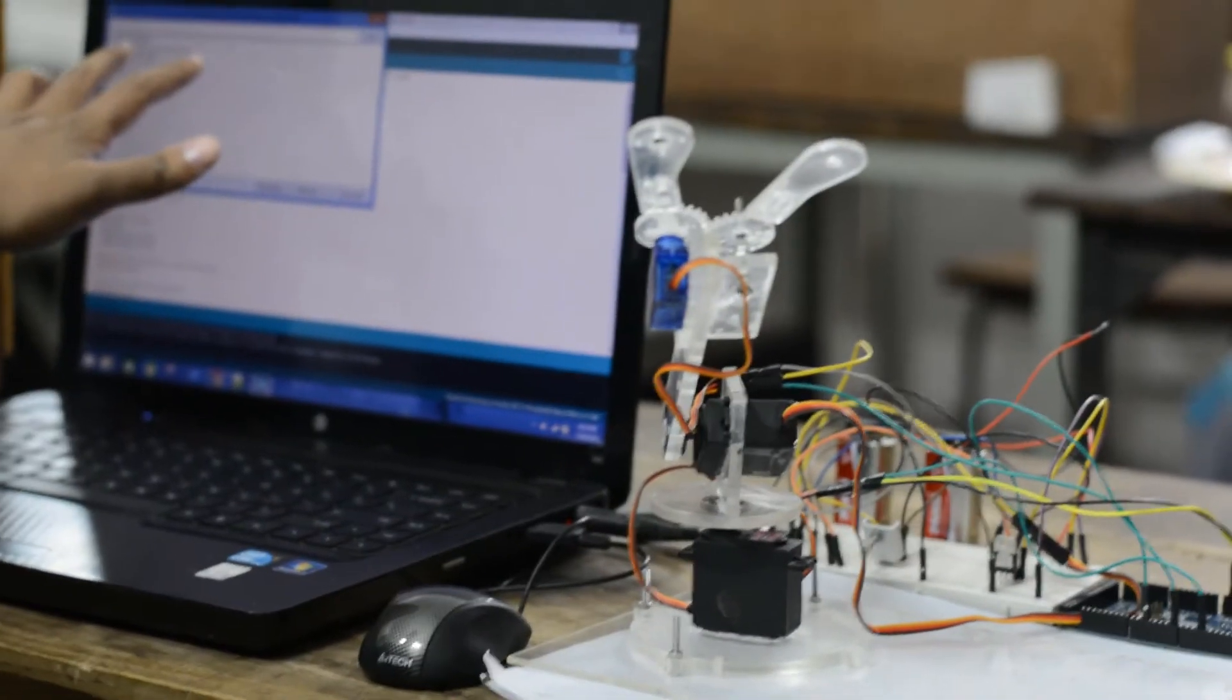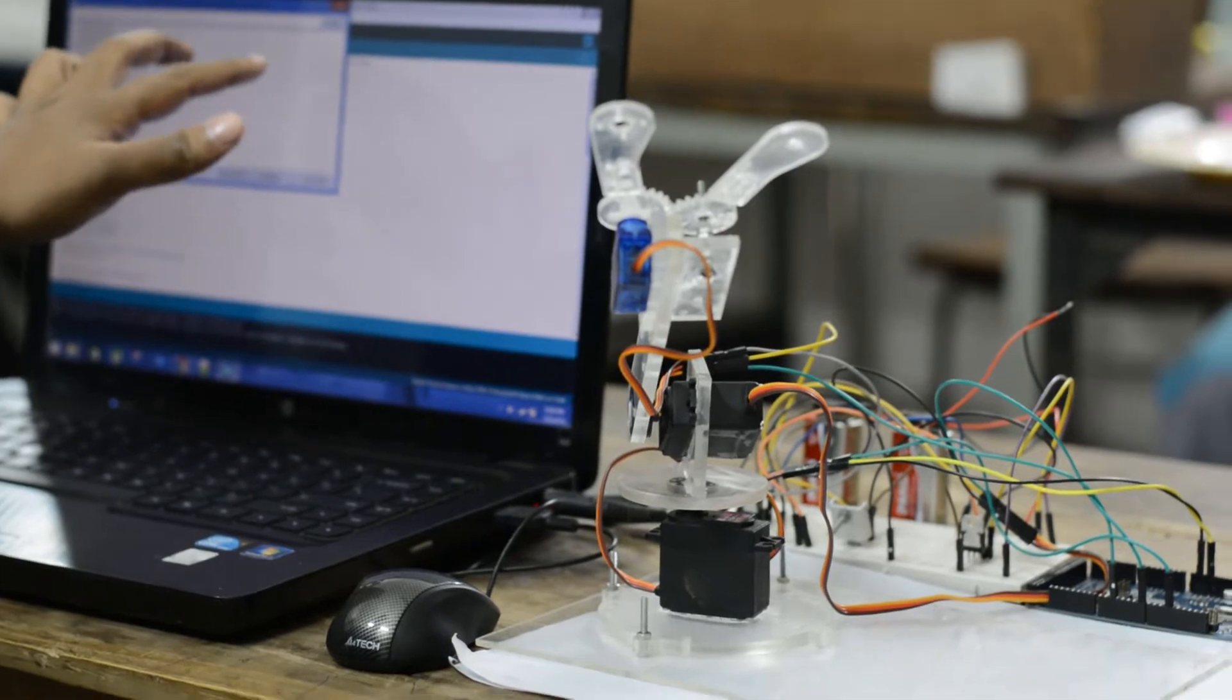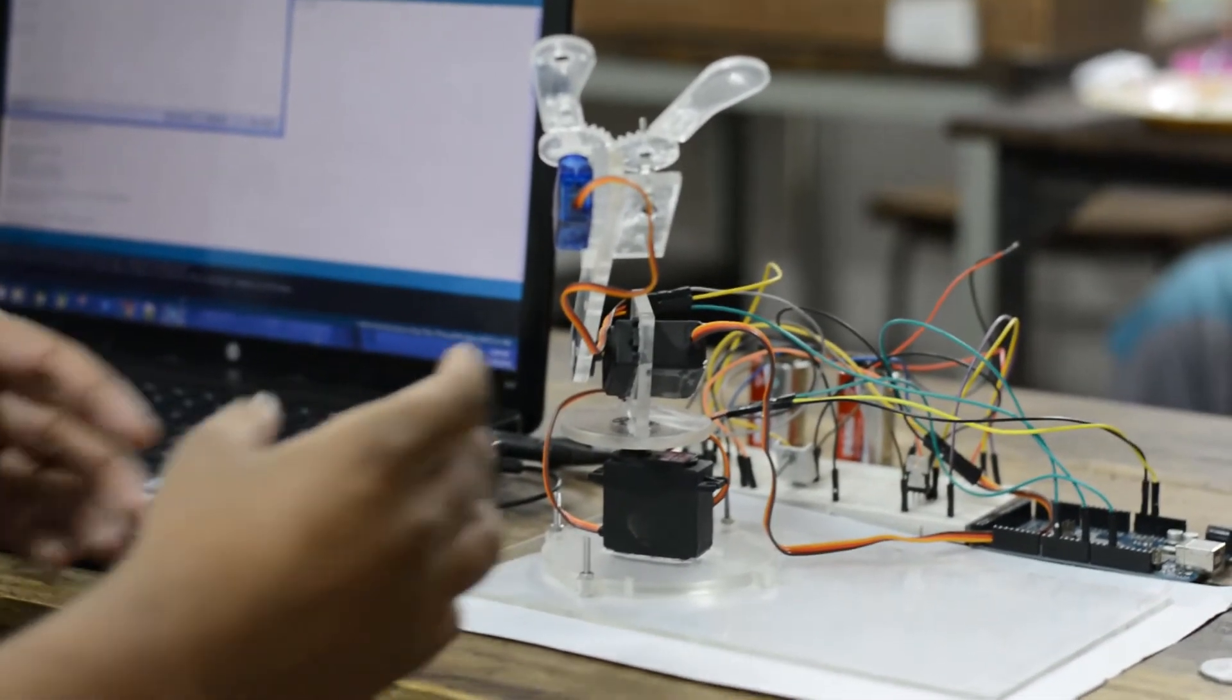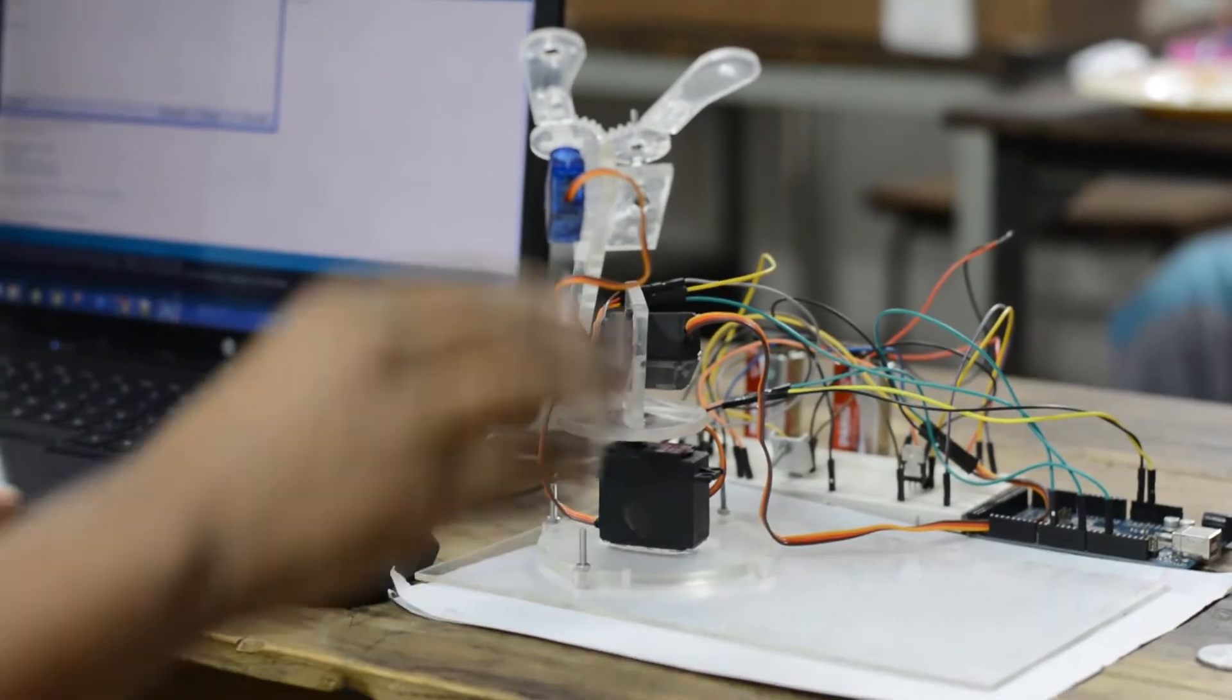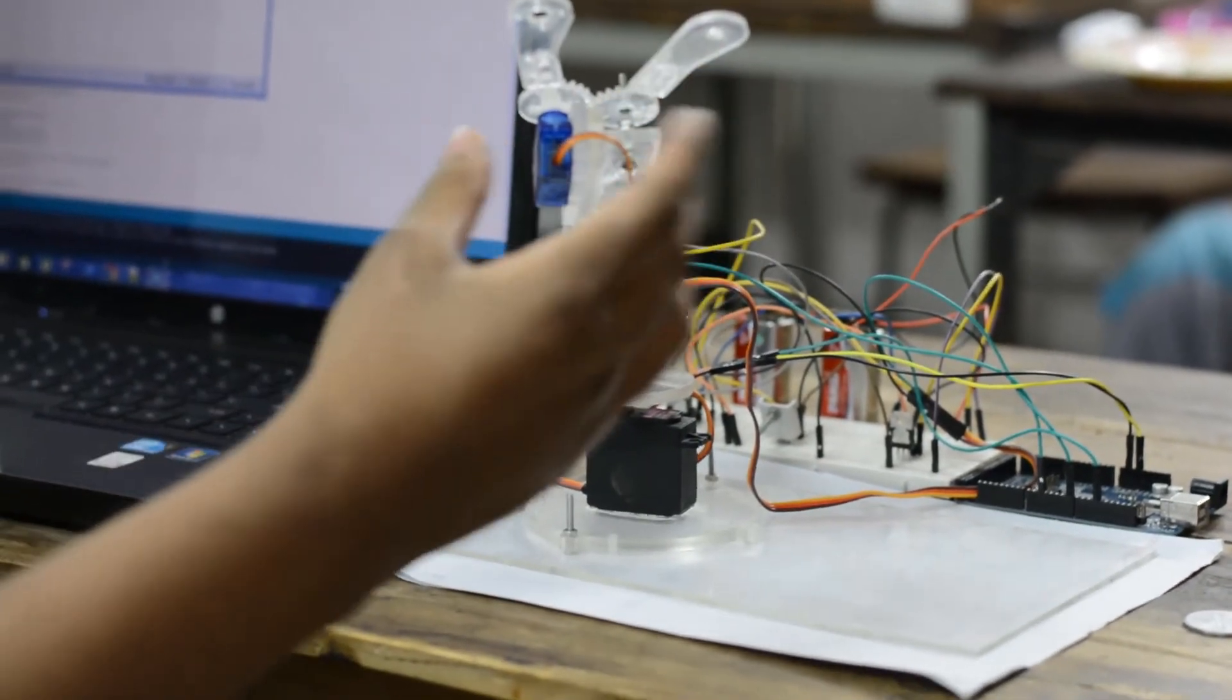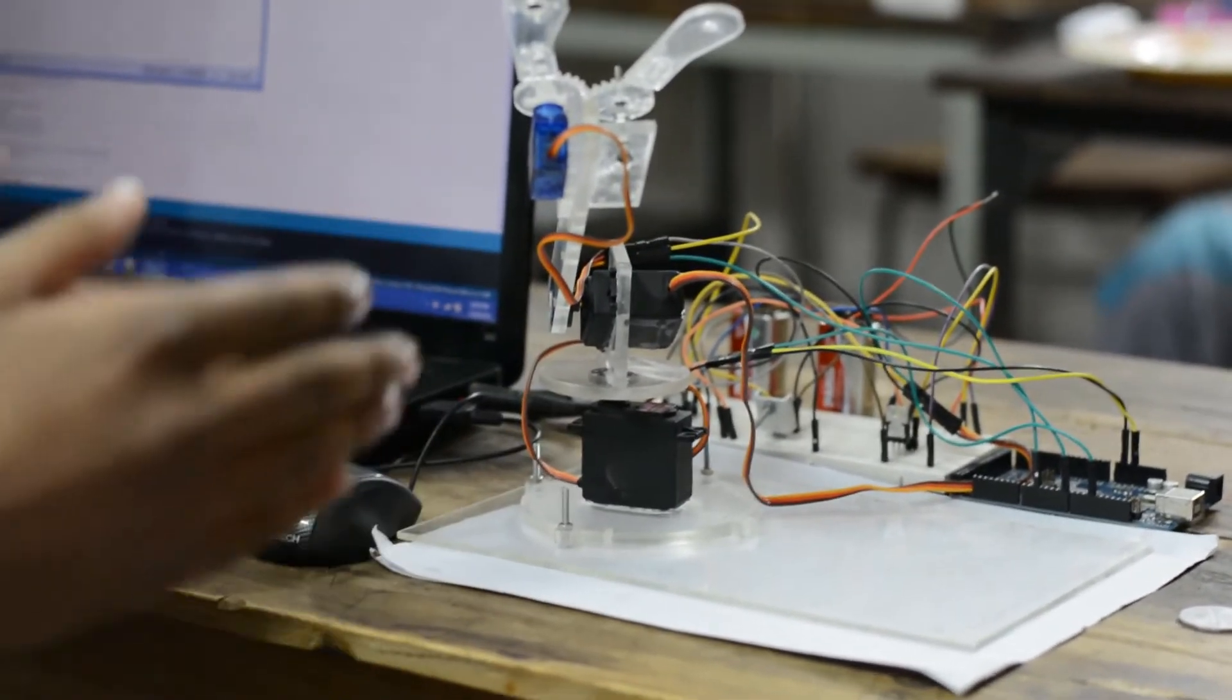We give theta angle input into the serial monitor. Then the base servo motor will move to that angle. Then the robotic arm will move downward. The grip will be opened and thus we smoothly replace the object to another angle.